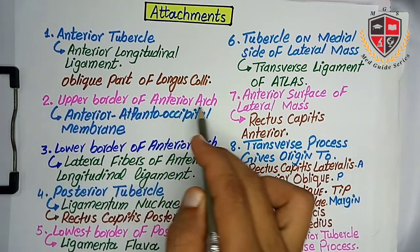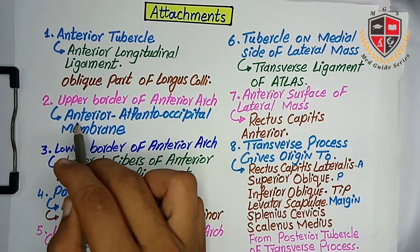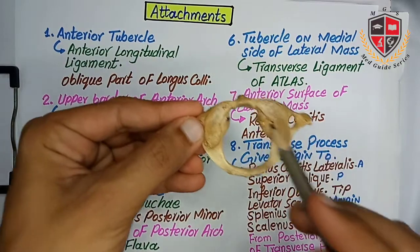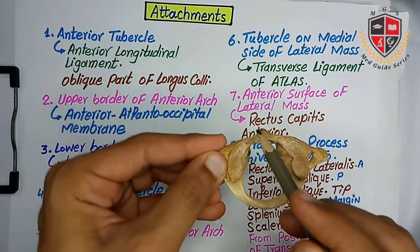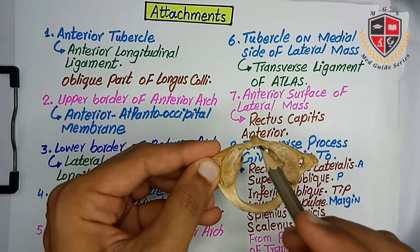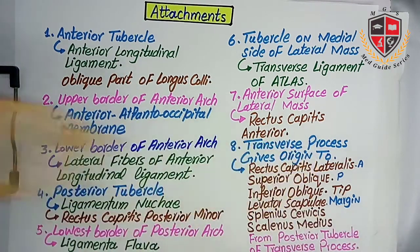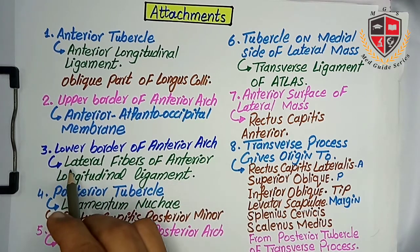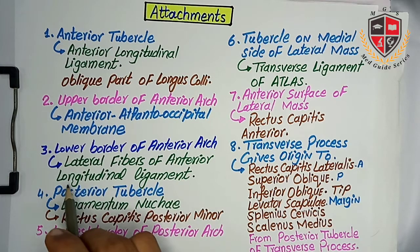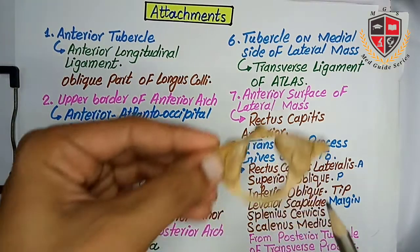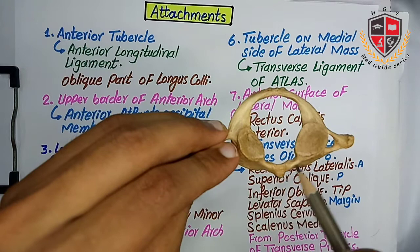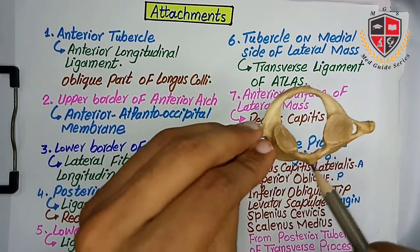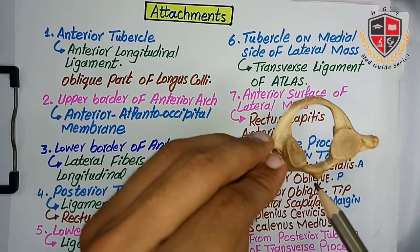The upper border of the anterior arch provides attachment to the anterior atlantooccipital membrane. The lower border of the anterior arch gives attachment to the lateral fibers of the anterior longitudinal ligament.